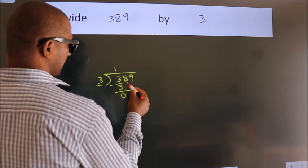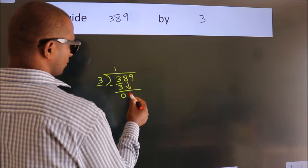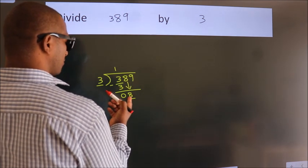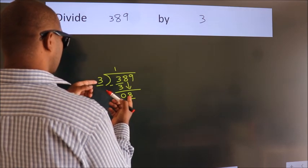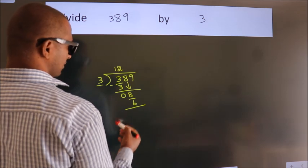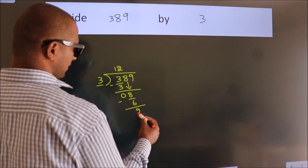After this, bring down the next number: 8. A number close to 8 in the 3 table is 3 twos, which is 6. Now we subtract and get 2.